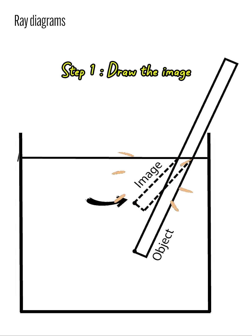First, we will draw the image appearing slightly above the object. Take note that since the straw is only partially submerged, the image that we observe will appear bent.